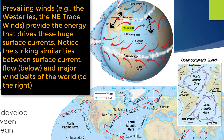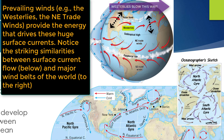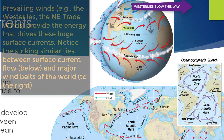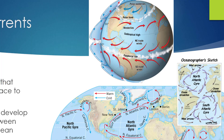As their name implies, the westerlies blow from west to east. And they exist between the subtropical high pressure belt and the polar front shown in this image. So keeping in mind that the westerlies blow from west to east, let's see what's happening with the ocean currents between the latitudes of 30 degrees and 60 degrees.